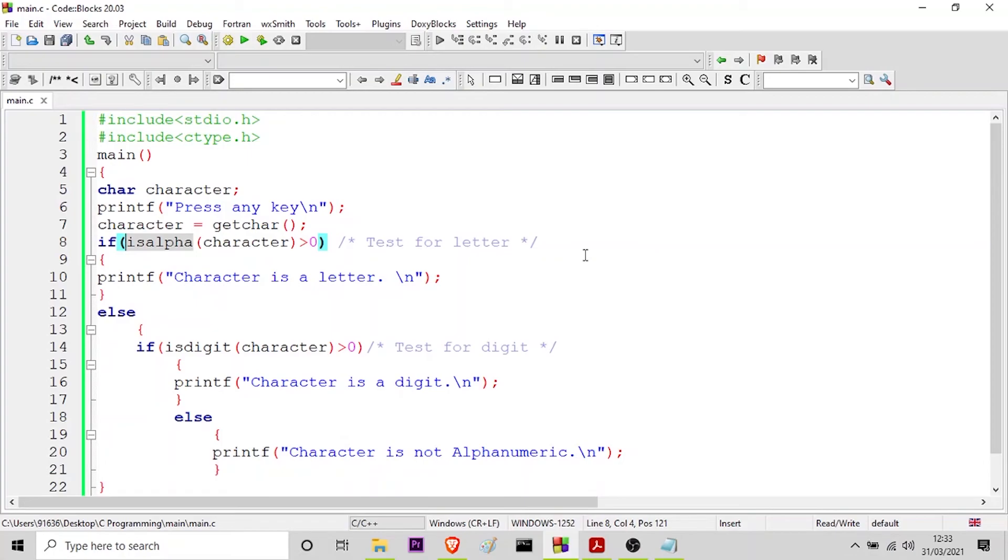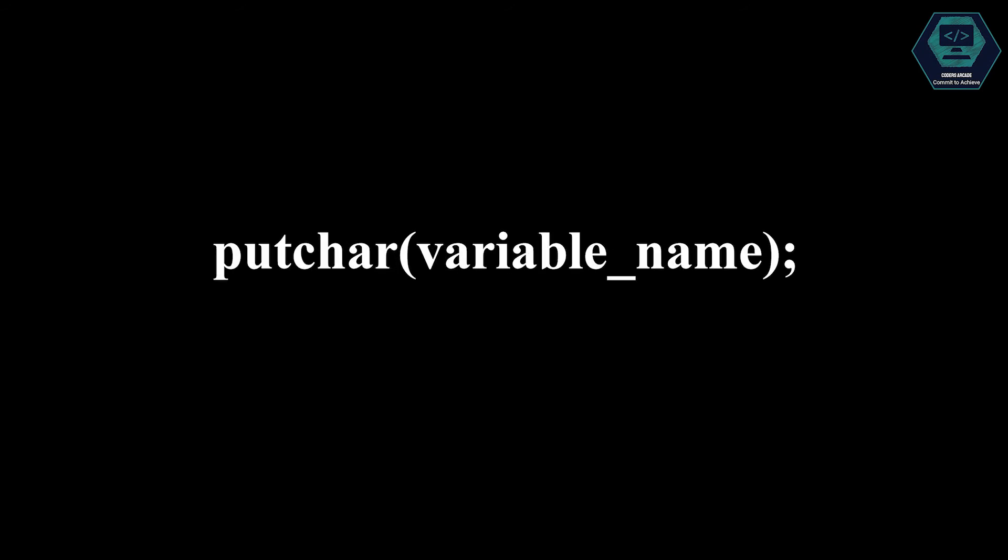Now let us move on to the next topic, which is writing a character. Like getchar, there is an analogous function putchar for writing characters one at a time to the terminal. It takes the form: putchar(variable_name), where variable_name is a character type variable containing a character. This statement displays the character contained in the variable at the terminal. For example, answer = 'y'; putchar(answer) will display the character y on the screen. And putchar('\n') would cause the cursor to move to the beginning of the next line.